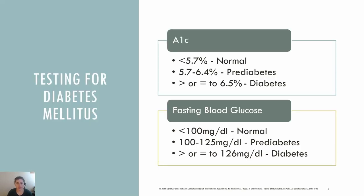Let's review testing for diabetes. The A1c test measures the average blood glucose level over three months. Less than 5.7% is normal; 5.7%–6.4% is prediabetes; and greater than or equal to 6.5% is diabetes. Another test is fasting blood glucose: less than 100 mg per deciliter is normal; 100–125 indicates prediabetes; and greater than or equal to 126 indicates diabetes.